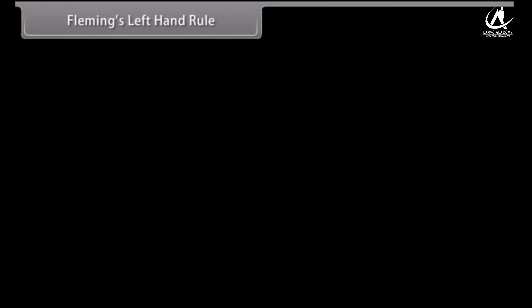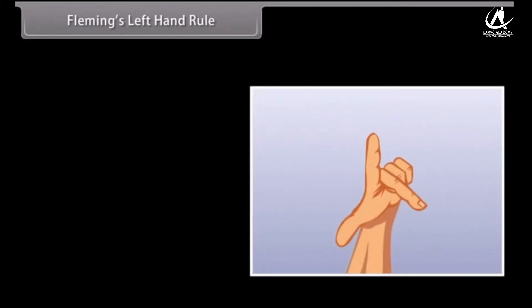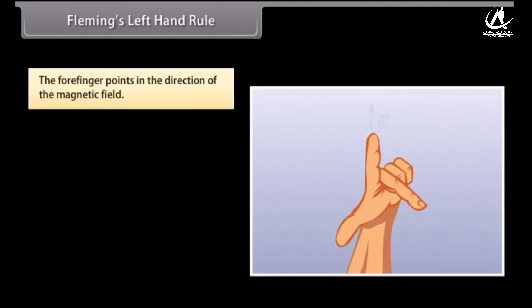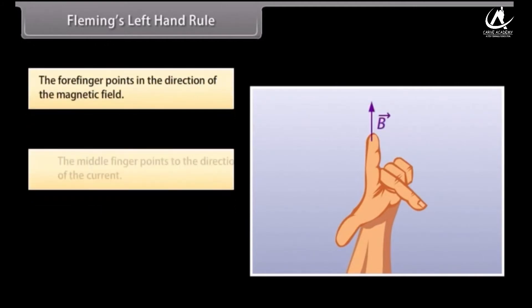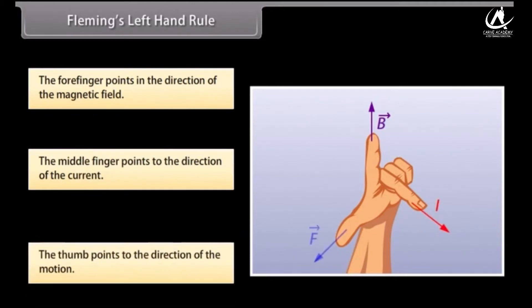Fleming's Left Hand Rule is a mnemonic to represent three directions. You need to stretch your thumb, forefinger and middle finger of your left hand. Each finger points to a specific direction. The forefinger points in the direction of the magnetic field. The middle finger points to the direction of the current. The thumb points to the direction of the motion. This is Fleming's Left Hand Rule. Examples include woofers, subwoofers, and electrical actuators.